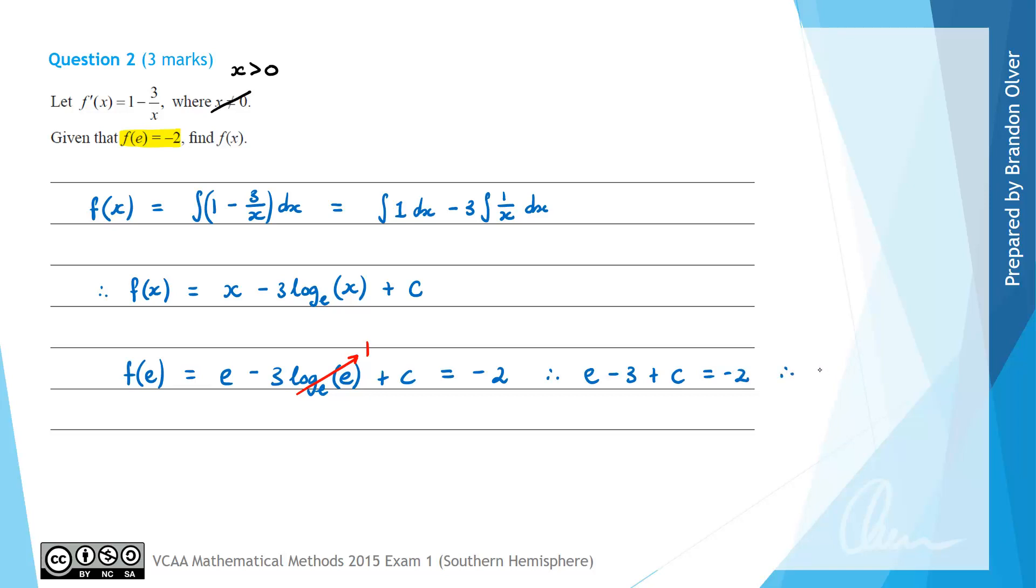And rearranging that to get c by itself we find that c would equal, and adding 3 to both sides would give 1 and then subtracting e away would give c = 1 - e. So therefore f(x) which is what we were asked to find is going to equal x - 3log_e(x) + 1 - e. So that is the answer to this question.